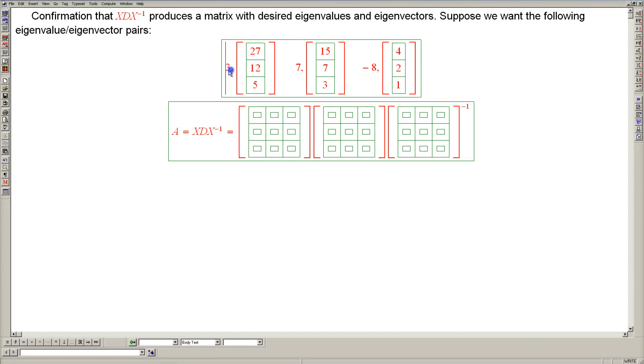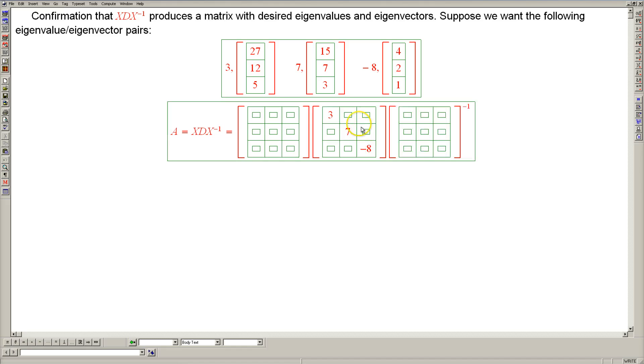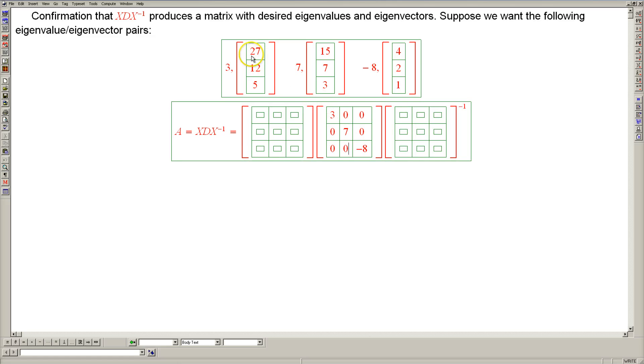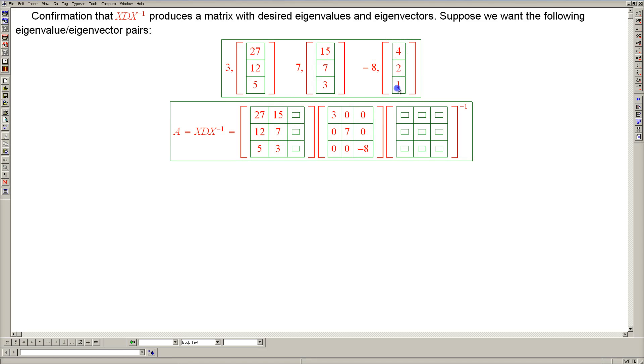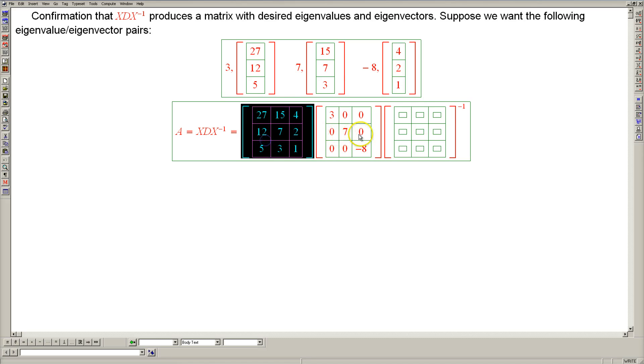Let's construct a matrix with these eigenvalue eigenvector pairs, and according to the strategy we have just devised, the eigenvalues go on the diagonal of the middle matrix, and let's fill the rest with zeros. And the corresponding eigenvectors go into the appropriate columns of the matrix on the left. And on the right we have the inverse of the same matrix.